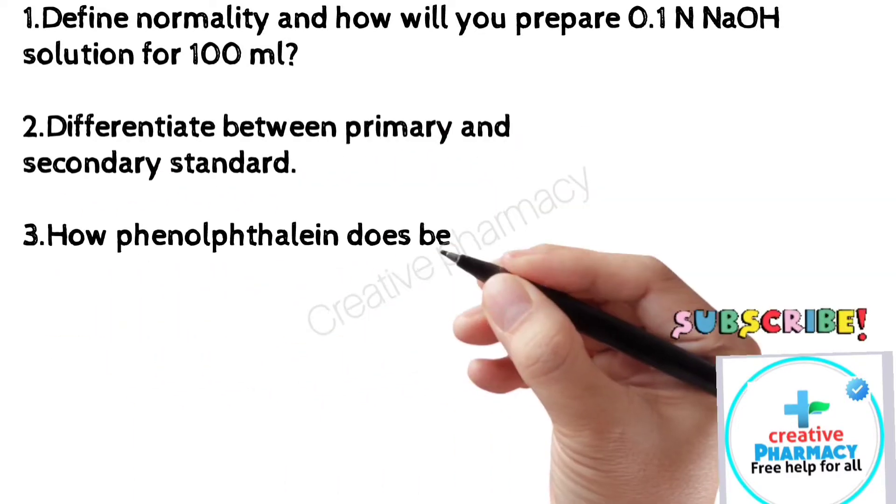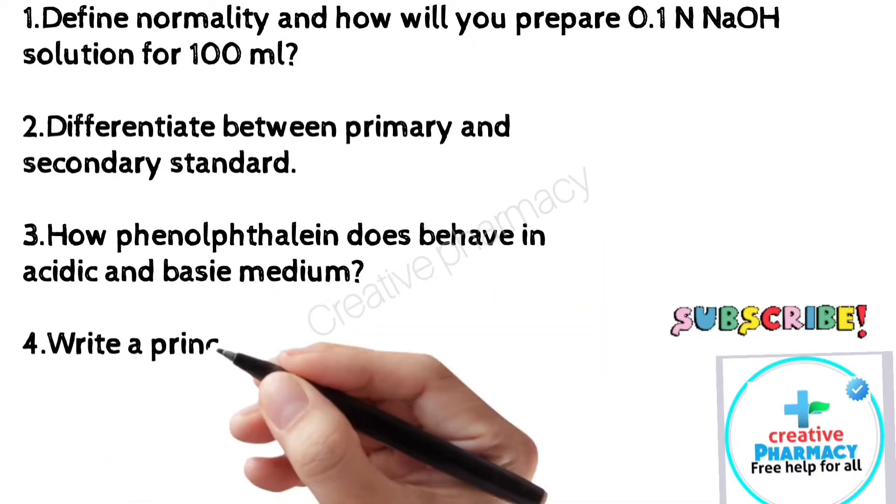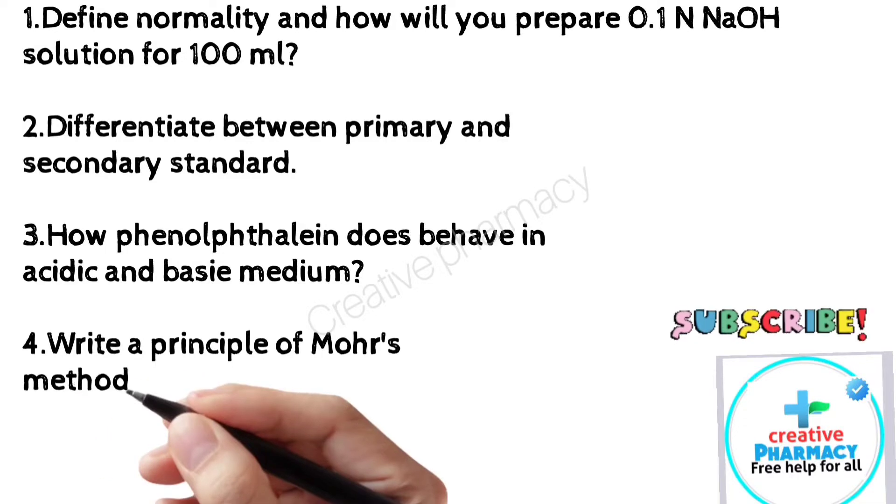3. How phenolphthalein does behave in acidic and basic medium. 4. Write a principle of Mohr's method.